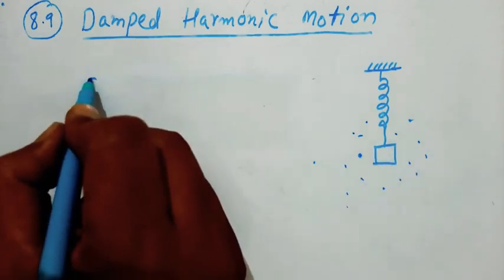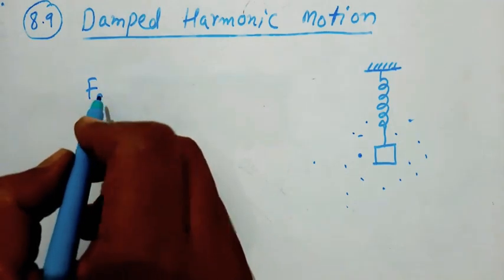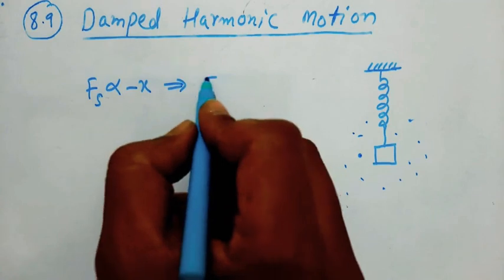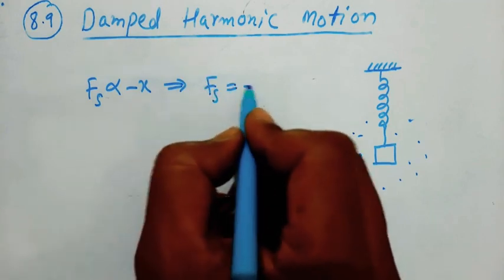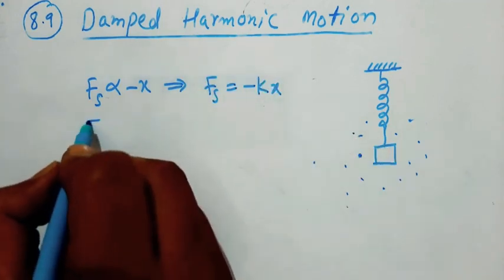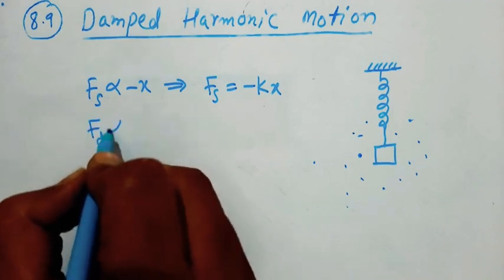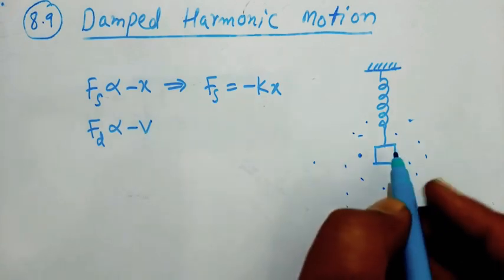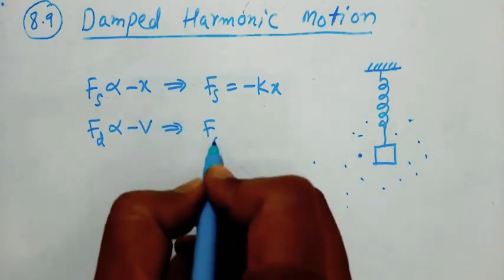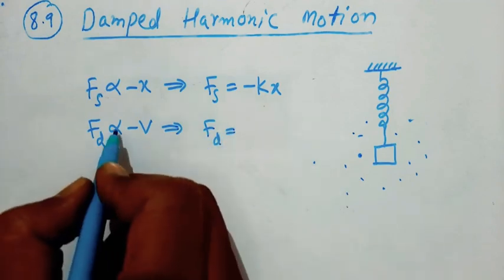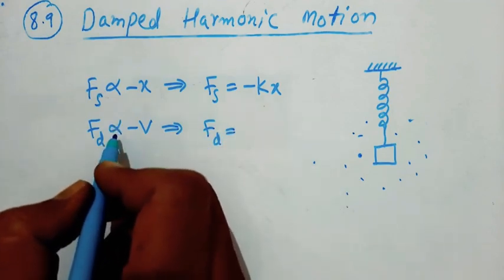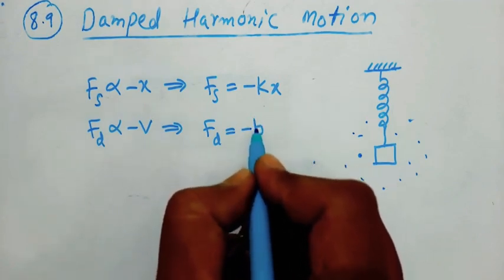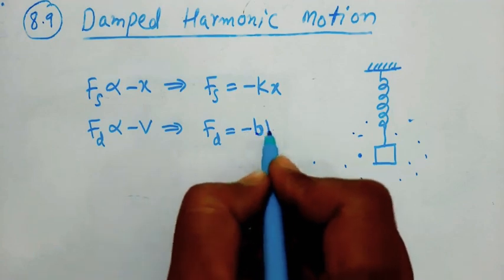The spring force is nothing but the restoring force, which is proportional to displacement. So that is Fs equal to minus Kx. And the other force is the damping force, so Fd is proportional to minus V. Here V is nothing but the velocity of the block. So Fd is equal to, removing proportionality and taking a proportionality constant B, that is minus B into V. Here B is the damping force constant.